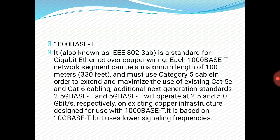The last type is 1000BaseT, the standard Gigabit Ethernet over copper wiring. A 1000BaseT network segment can have a maximum length of 100 meters and must use category 5 cable. To extend the use of existing Cat5E and Cat6 cabling, next-generation standards 2.5BaseT and 5BaseT will operate at 2.5 and 5.0 Gbps respectively on existing copper infrastructure designed for 1000BaseT. It is based on 10GBaseT but uses lower power signal frequencies.